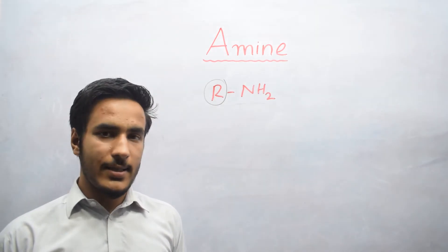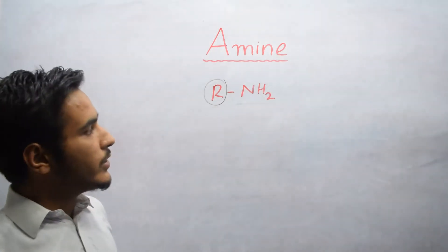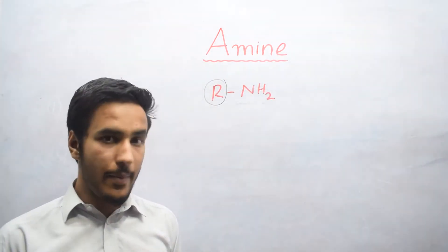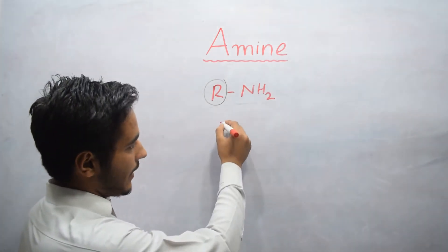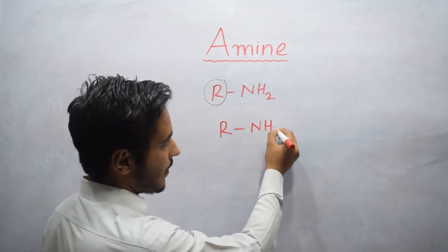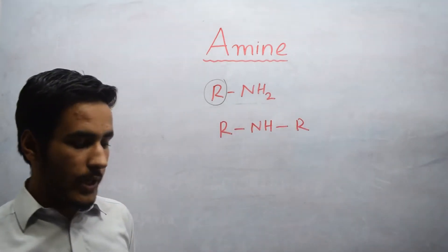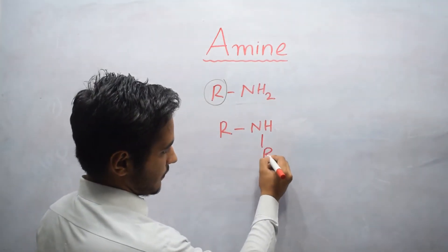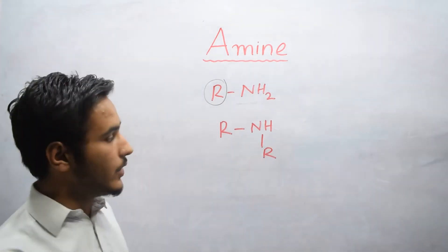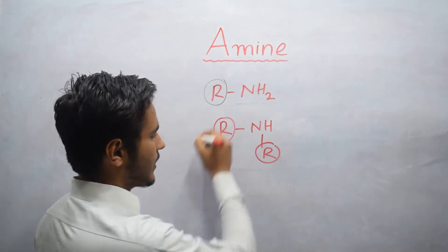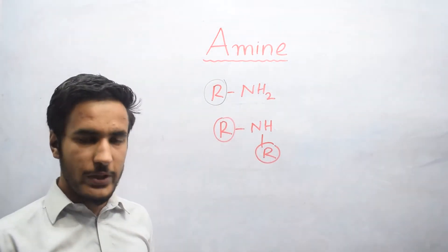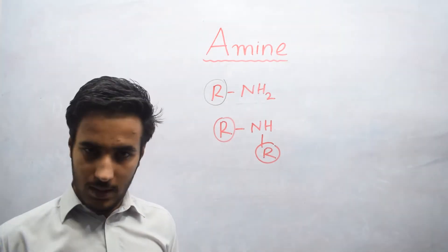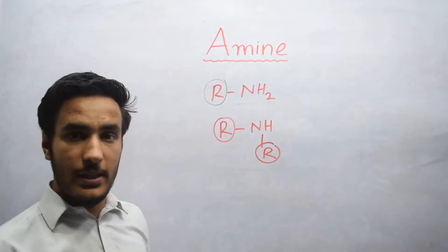The second one is Secondary Amine. When we replace two Hydrogen by two Alkyl groups, that Amine is known as Secondary Amine. For example, R bonded with NH bonded with R. So in this case, we have two Alkyl groups. And we can also write it in this way. This is basically Secondary Amine. And here we have two Alkyl groups. This Alkyl group may be CH3, which is Methyl. It may be Ethyl, C2H5. It may be Propyl, Butyl, etc.